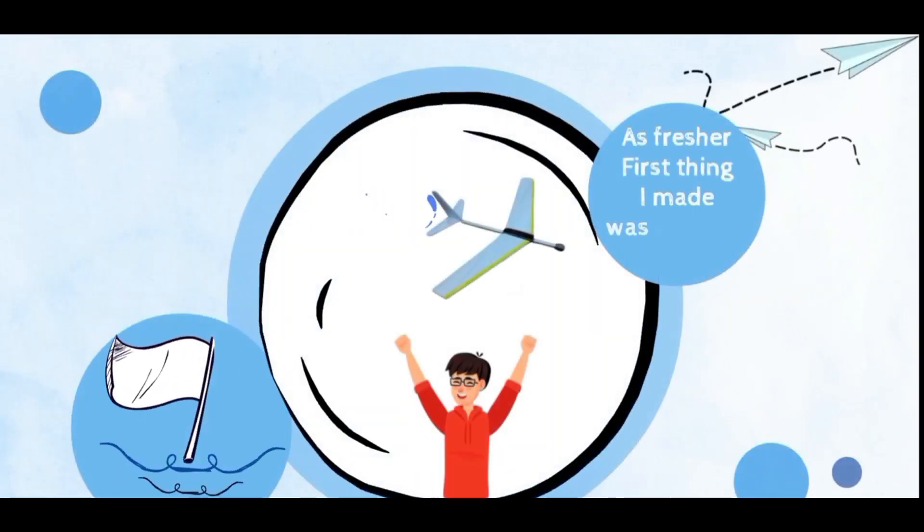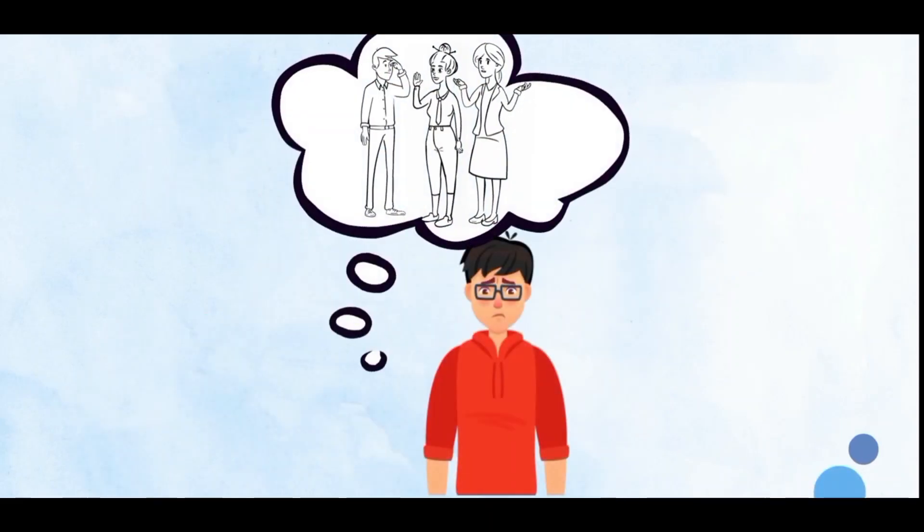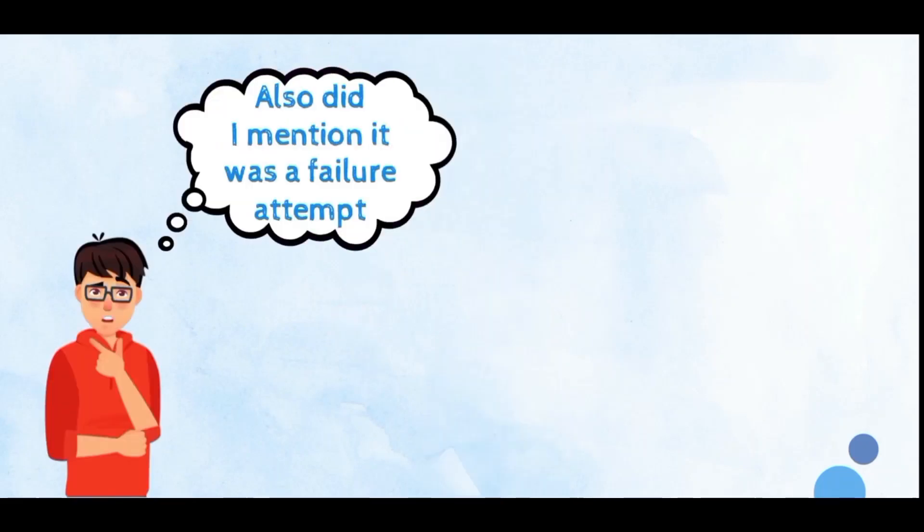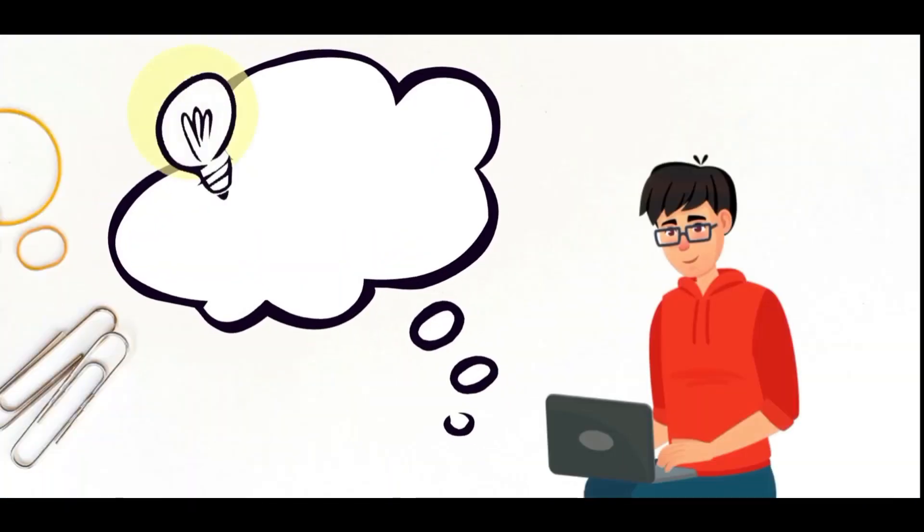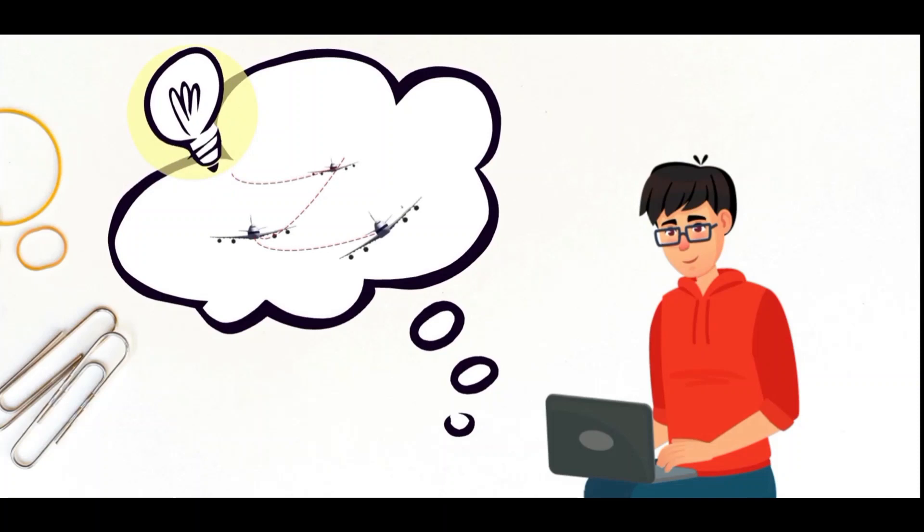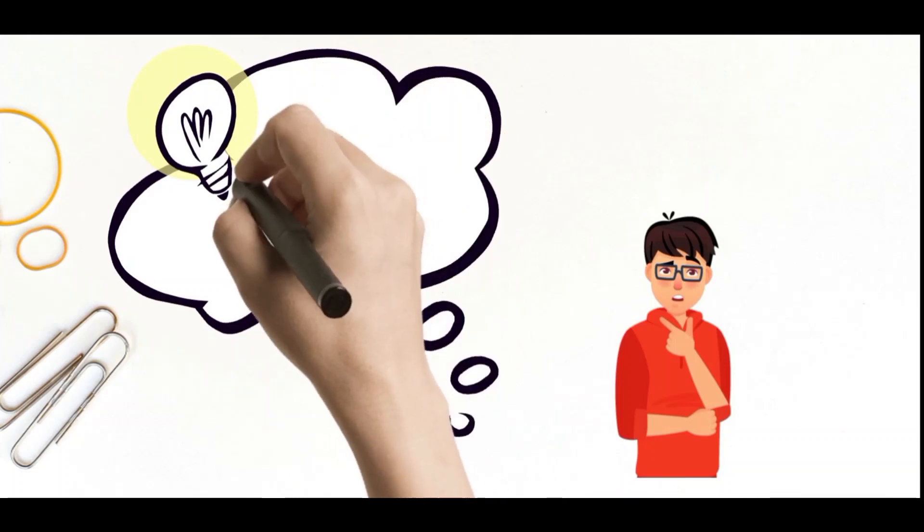One of the first things that I made as a freshman was a glider. This is not something to boast much about and my relatives used to taunt me a lot for making something that can even be made by a 10 year old kid. Also, that glider was a failure as it would roll to the left or right. As I dove deeper into the concepts of aero, I realized what my mistake was. I realized that I completely ignored the roll stability by not giving my glider a dihedral angle.